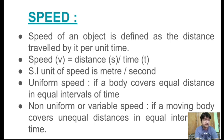And what is the unit of speed? The unit is meter per second, and kilometer per hour is also used. Kilometer per hour can be converted to meter per second. For example, 54 kilometers per hour — to change it to meter per second, we multiply by 5 upon 18, then we get meter per second.